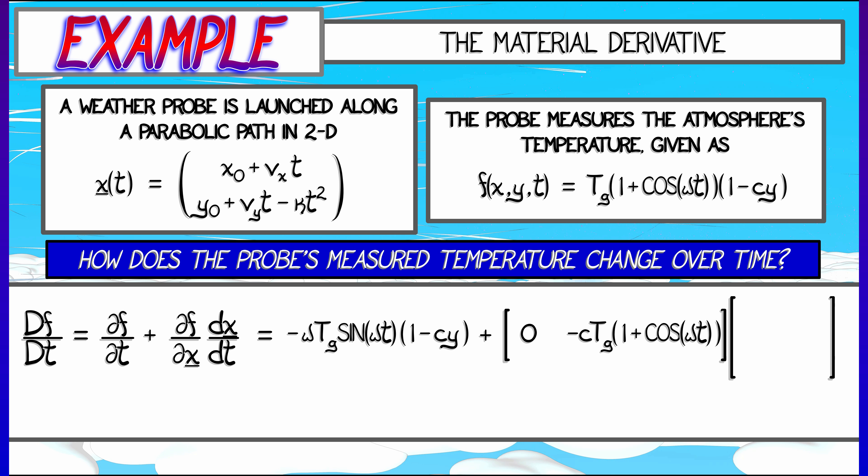All that has to be multiplied by the velocity, by dx dt, which is going to be the column matrix given by Vx, and then Vy minus 2 kappa T.